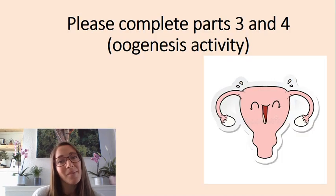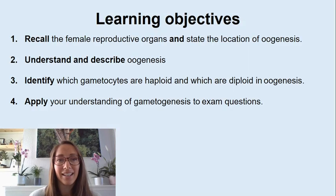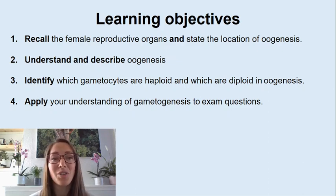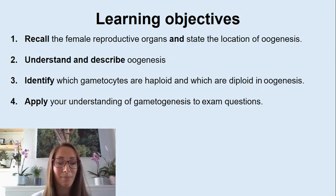Please pause the video and complete parts three and four of the oogenesis activity. Today's learning objectives covered: recalling the female reproductive organs and the location of oogenesis, understanding and describing the oogenesis process, identifying whether gametes are haploid or diploid at different stages, and applying your understanding to exam questions.